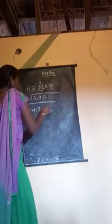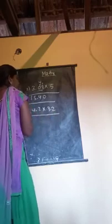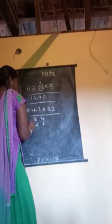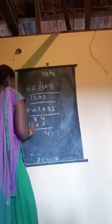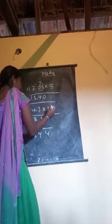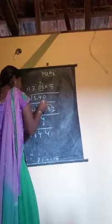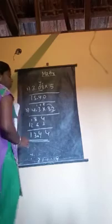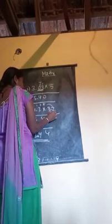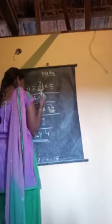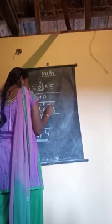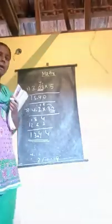If both numbers have a decimal part, for example 4.2 into 3.2: multiply as whole numbers — 42 into 32. 2 times 2 is 4, 2 times 4 is 8, 3 times 2 is 6, 3 times 4 is 12. Adding up: 4, 8, 9, 13, 14 — total is 1344. Count decimal digits: 4.2 has 1 digit, 3.2 has 1 digit — total 2 decimal places — put the point 2 digits from the right. Answer: 13.44.